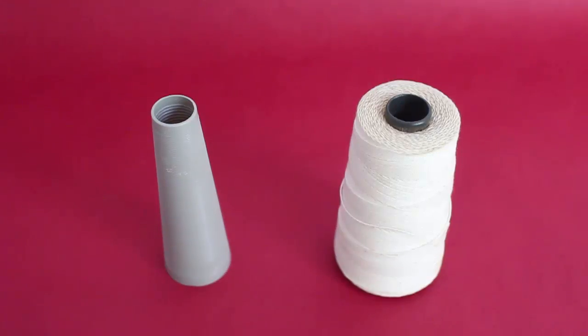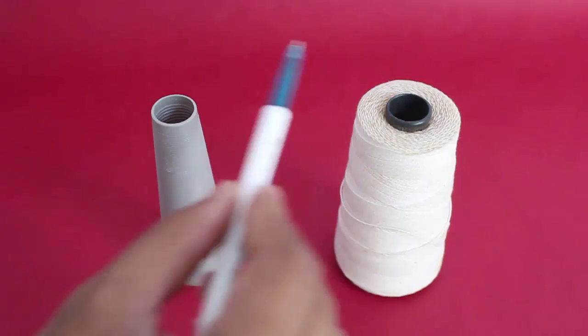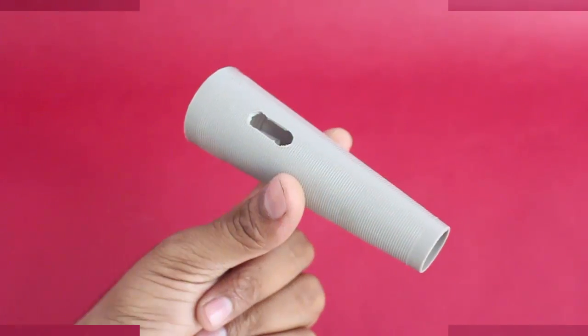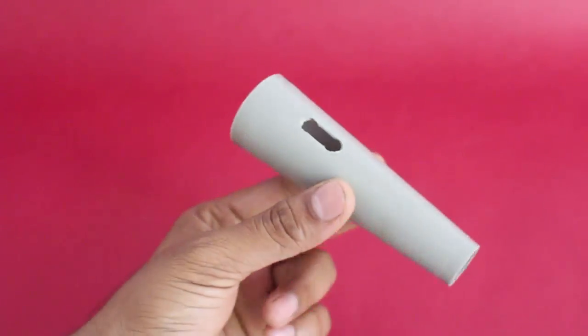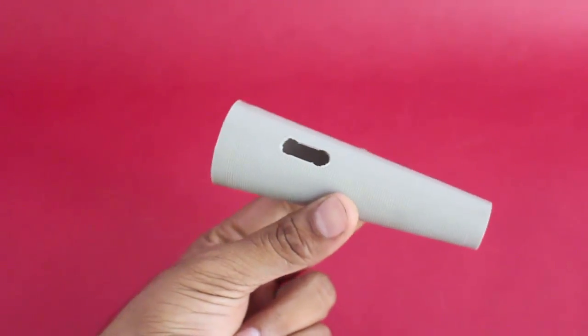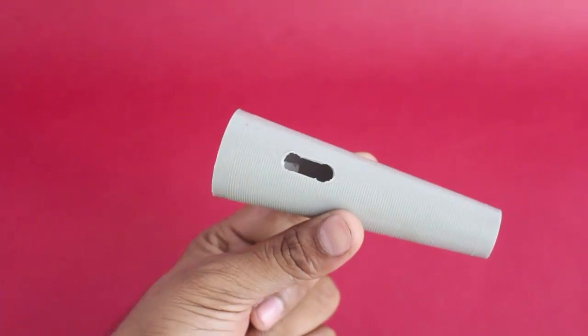Very often a large reel of thread is wound on a conical plastic cone. Salvage a plastic cone from a thread reel. Make a small slit in the cone as shown. This is the slit.